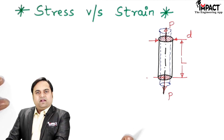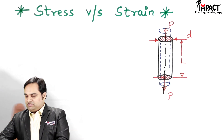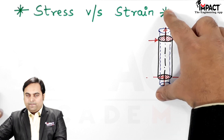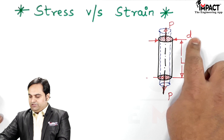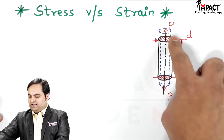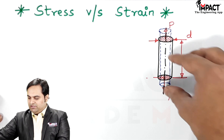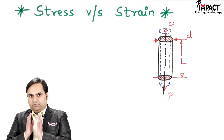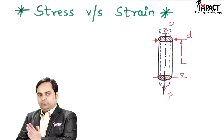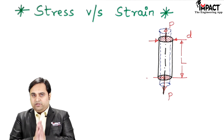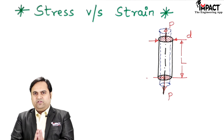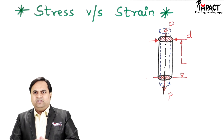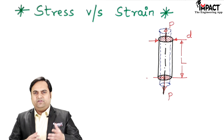In this diagram, I have drawn a rod which is subjected to an axial load. As we can see here, the load is of pull type. The rod is having diameter D and the length is L. Under the action of this load, the length of the rod is going to increase and the diameter will decrease. The material I am assuming here is the ductile material, which can be easily drawn into wires or that material which can easily flow when the load is applied.